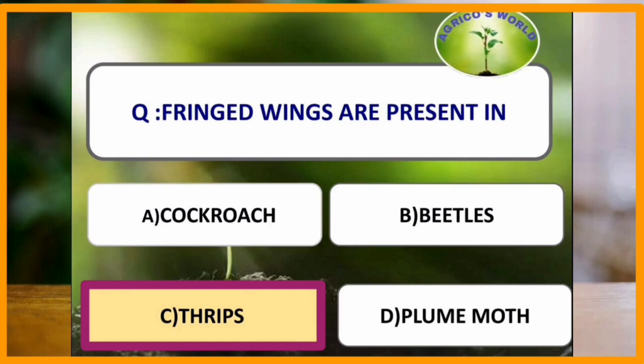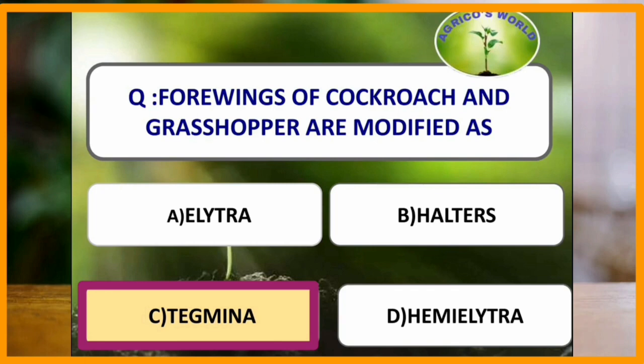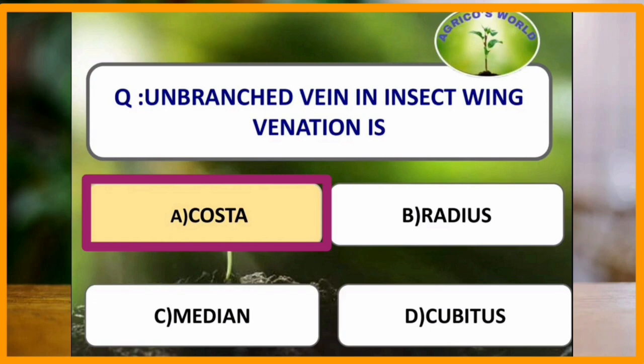Forewings of cockroach and grasshopper are modified as tegmena. The forewings are leathery and tough and they protect the membranous hind wings. In insect wing venation, the unbranched vein is costa. Costa forms the thick anterior margin of the wing and is unbranched and also convex.